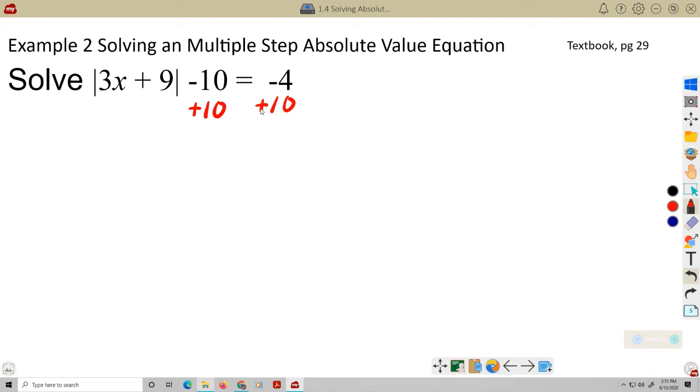So, negative 10 plus 10 is 0. But, on the right side, this becomes a 6. Don't be in a rush to say something is a no solution if you see a negative number on one side. You can only make that judgment after you've isolated the absolute value bracket. Now that's isolated, I can see it's equal to a positive. So, this is fine. I can write my two cases here. 3x plus 9 equals 6. 3x plus 9 equals negative 6. Positive case, negative case. Subtracting 9 from both sides.